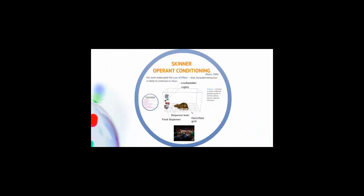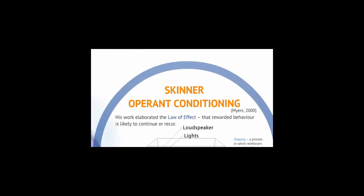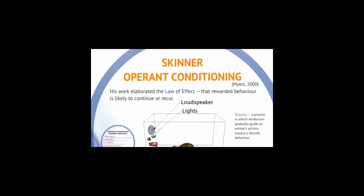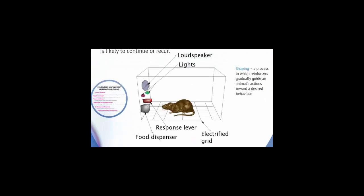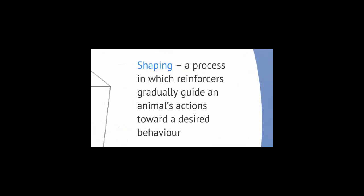Let's move on to operant conditioning with B.F. Skinner. Skinner designed an operant chamber called the Skinner Box, where he trained a rat to shape its behavior and press a lever to get a food reward. He called this learning process shaping, where reinforcers such as food gradually guide the actions toward a desired behavior. The trainer builds on the organism's pre-existing, naturally occurring behaviors, such as eating.